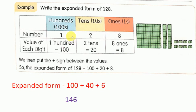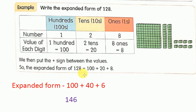Let us see another example with number 128. The number 128 has 1 hundred, 2 tens and 8 ones. First, we have to write how many hundreds, tens and ones it has. Then we need to write the value of each digit: 100 makes 100, 2 tens makes 20, 8 ones makes 8. We have to put the plus sign between these values to write the expanded form of 128. So, 100 plus 20 plus 8 makes 128.